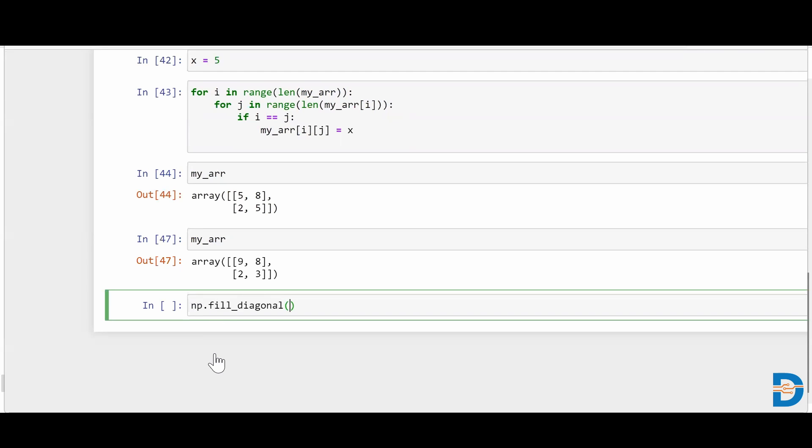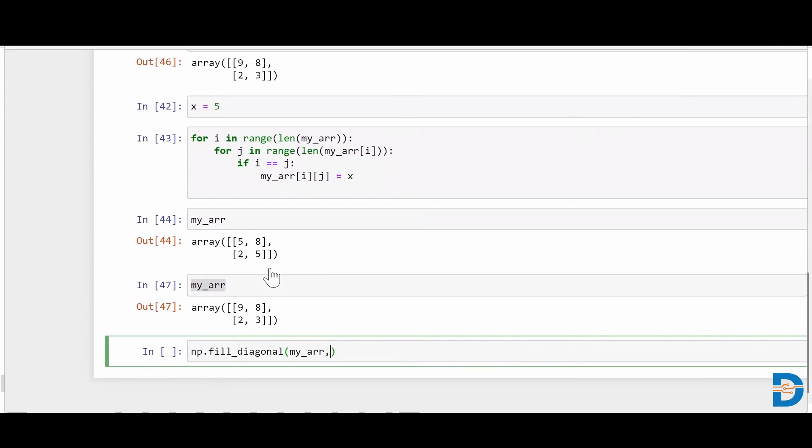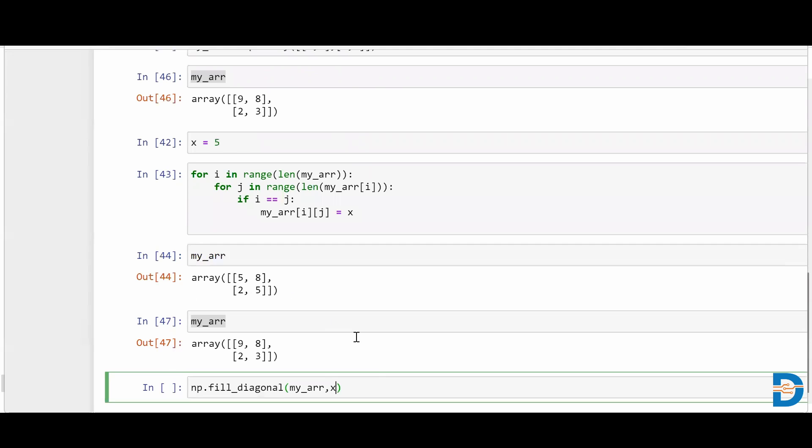That direct method which NumPy has pre-built is np.fill_diagonal, simple. You put your array, and then you put whatever value you want to put. Let's say x is equals to five, so I put x over here.